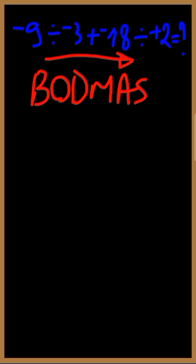From BODMAS, you'll see that the first arithmetic operation we have to perform is division. Negative 9 divided by negative 3 — we are dividing two negative numbers, so the result will be positive. This gives us positive 3. Plus — now move to the next operation.